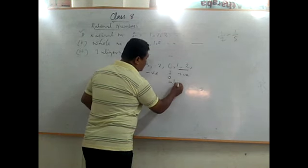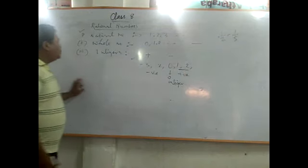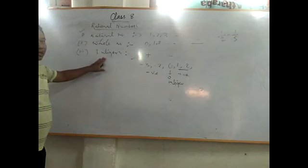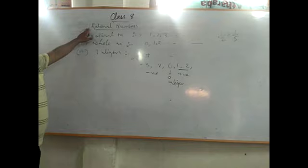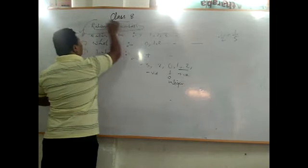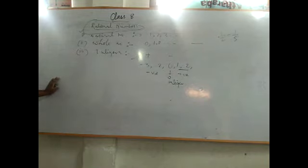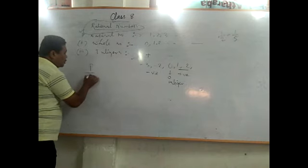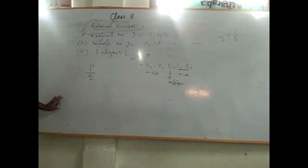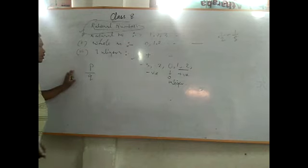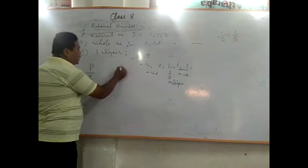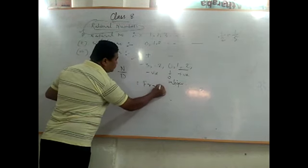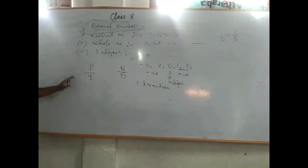So now we know what is natural number, whole number, and integers. Now let's come to the rational number, which is our chapter. What is a rational number? A rational number is the number which can be expressed in the form of p by q — that is, numerator by denominator. We can also refer to it as a fraction. Any number in the form of p by q is a rational number.